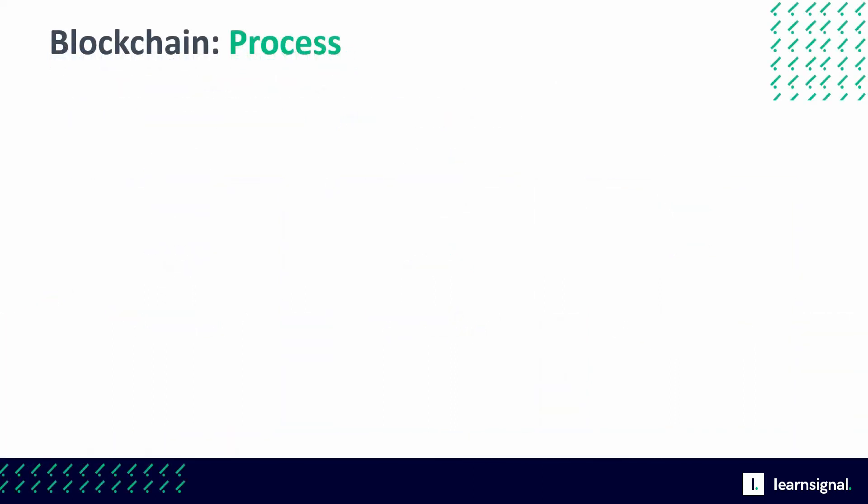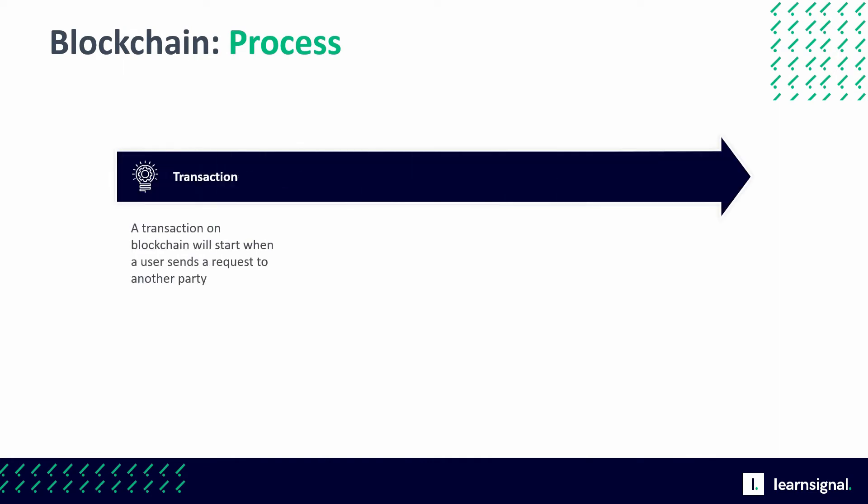Let's look now at the process that will be followed for a new block of data to be added to the blockchain. First, a transaction will take place. A transaction on blockchain starts when a user sends a request to another party. A unique address will be generated for each new request. A send and receive process is then carried out, which works similarly to the way a PayPal transaction would work.